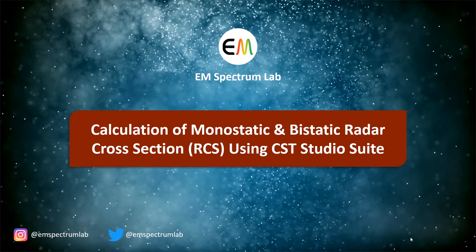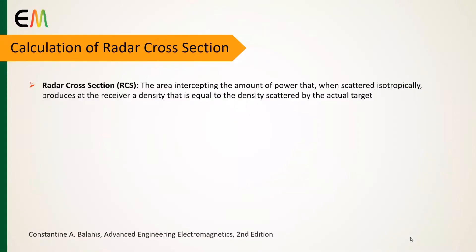Hi everyone. In this video I am going to show the calculation procedure of monostatic and bistatic radar cross-section by using CST software. An important parameter in scattering is the electromagnetic scattering by a target, which is usually represented by its echo area or radar cross-section.